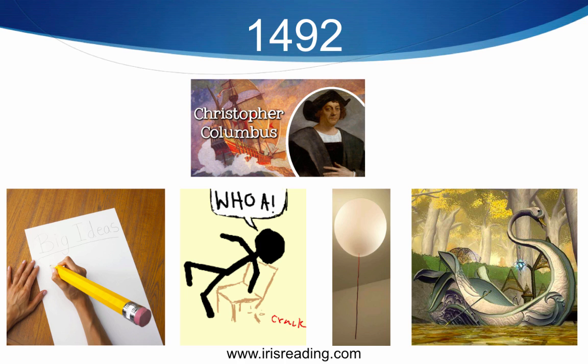Imagine this swan-shaped ship can actually fly. This doesn't have to make sense — it's actually better if it doesn't, because if you run this story through your mind a few times it'll be easy to remember. So again: picture Christopher Columbus writing with this giant pencil, his chair breaks, he falls to the ground, sees this balloon, and has a eureka moment that he's going to fly across the Atlantic in a swan-shaped ship. That's how you remember the 1, the 4, the 9, and the 2 — 1492 — related to Christopher Columbus.